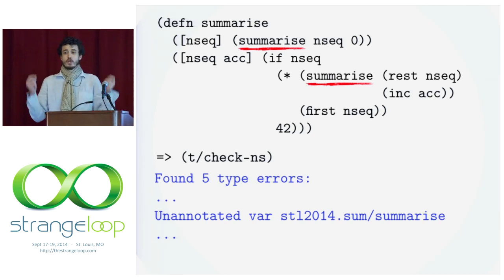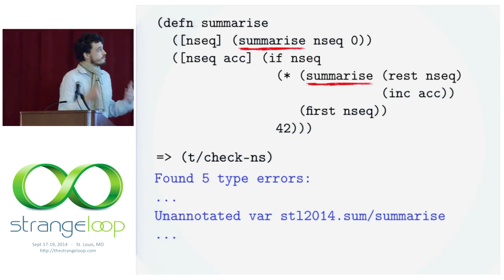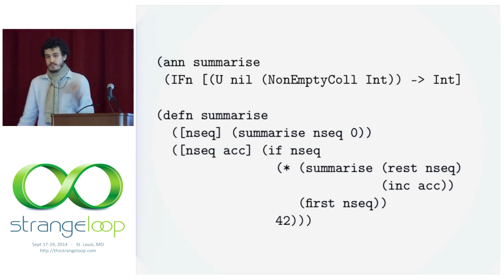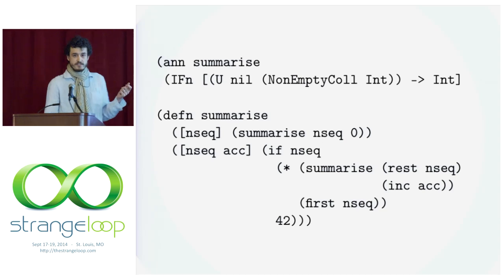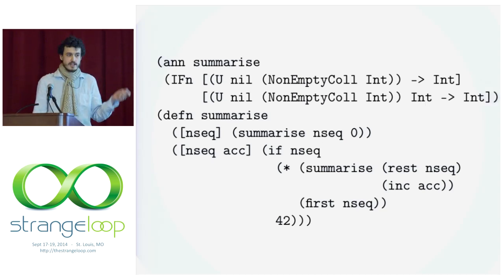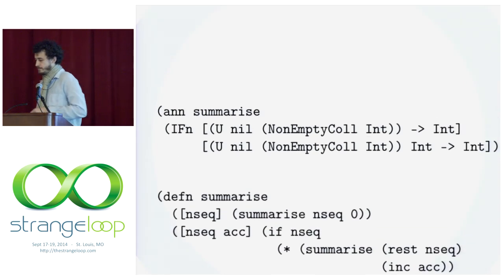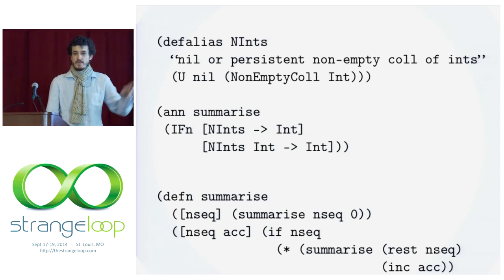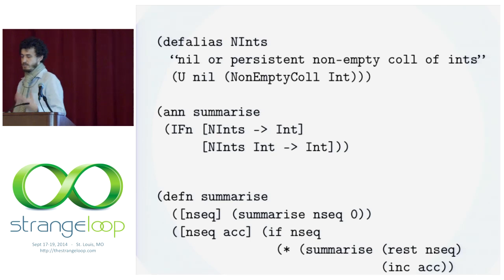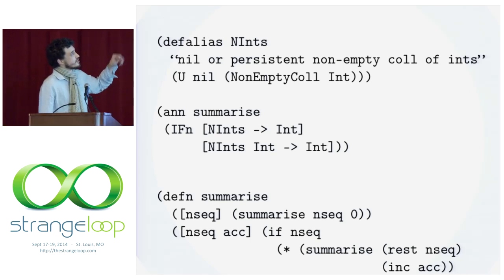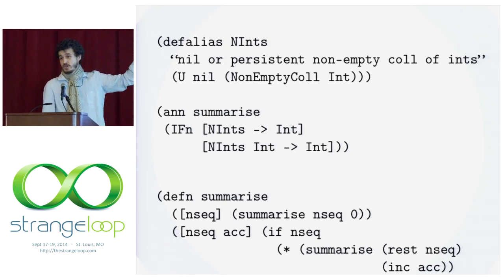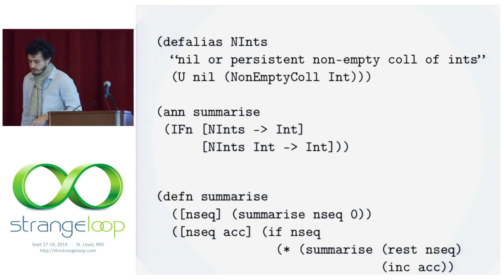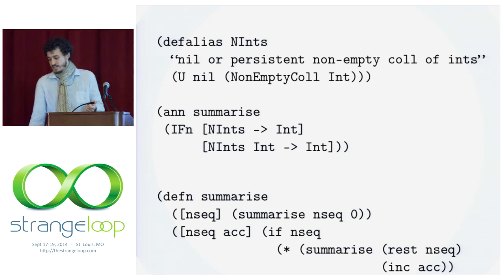This tells us that type closure uses local type inference, which means that we have to provide annotations for our top-level definitions. So let's annotate summarize. The first arity takes nil or a non-empty collection of ints and returns an int. The second arity is the same but has an extra accumulator int. There's some parentheses overload, so let's convert this common type into an alias. We'll call it nints or nillable ints.